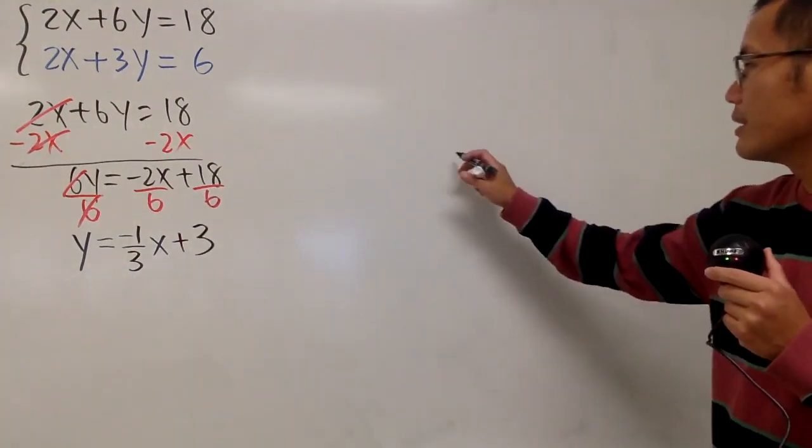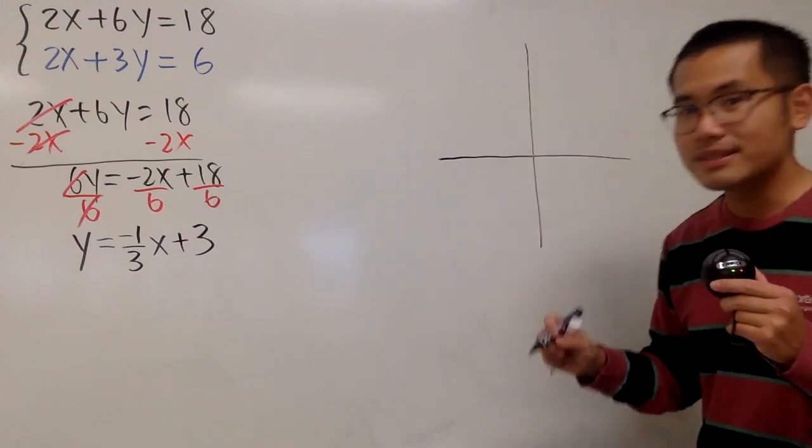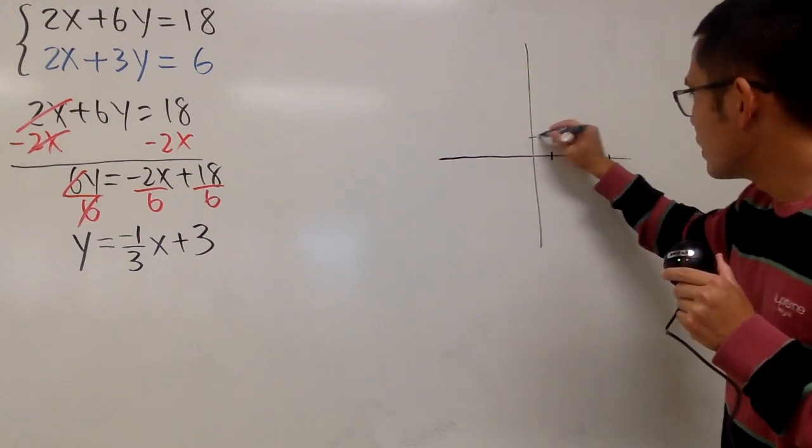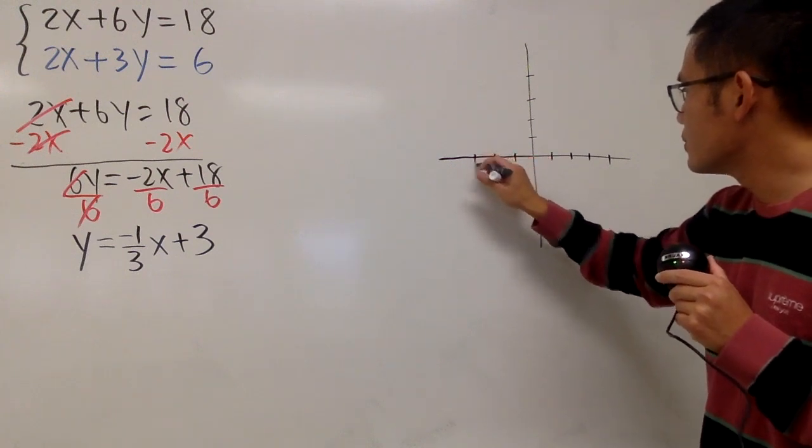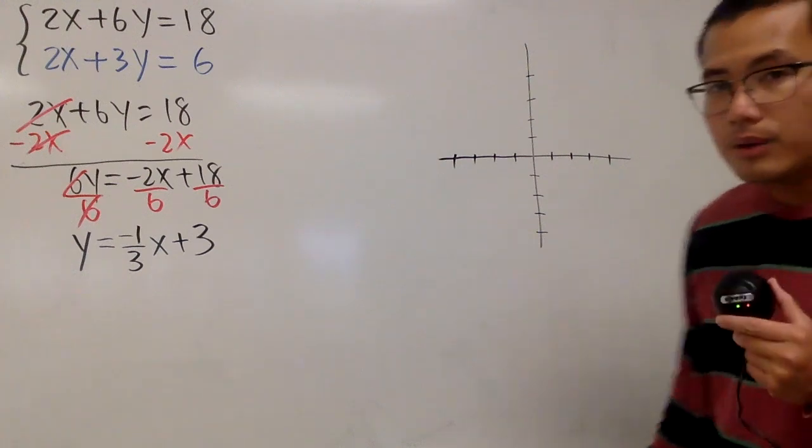So let's go ahead and make the graph first. So this time I will just try my best to do this for you guys. So here we go. Let's say we have 1, 2, 3, 4. 1, 2, 3, 4. And 1, 2, 3, 4. That should be enough. 1, 2, 3, 4.